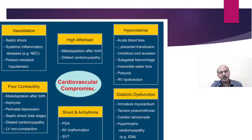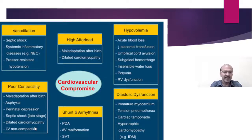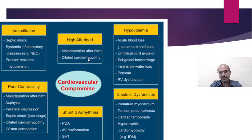Cardiovascular compromise in the newborn can be classified into factors due to vasodilatation — often seen with septic shock and systemic inflammatory disease related to NEC — and poor contractility related to maladaptation after birth. In extreme premature babies, the sudden rise in systemic vascular resistance after cord clamping may be difficult to cope with. Asphyxia leads to a similar problem, as does septic shock in later stages. The importance of delayed cord clamping comes in here: if we don't delay cord clamping, the preload is reduced and the baby will struggle even more.